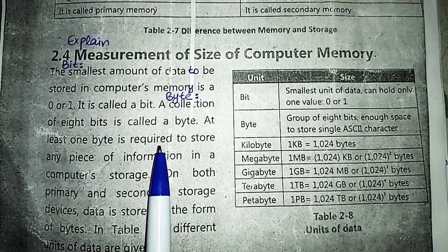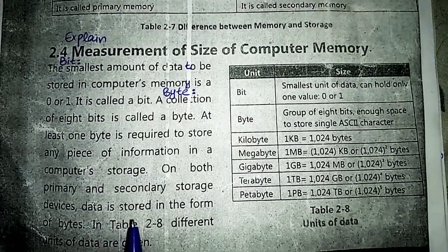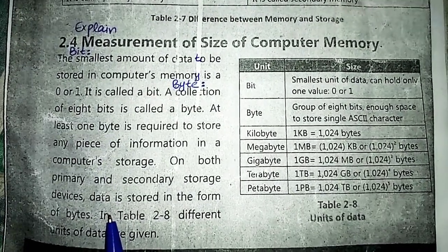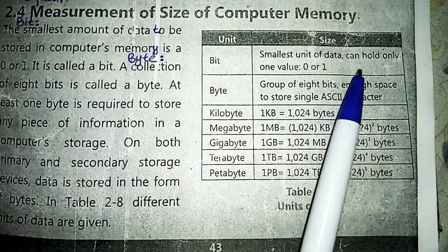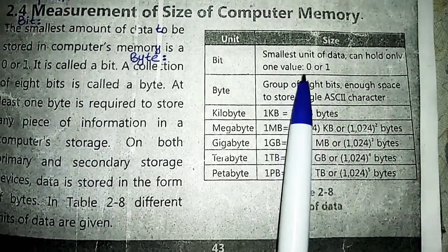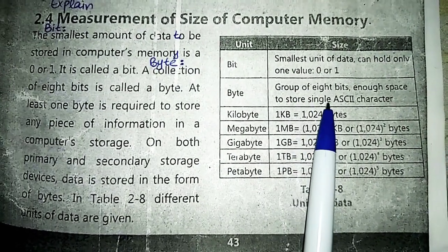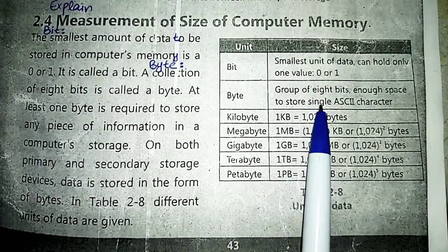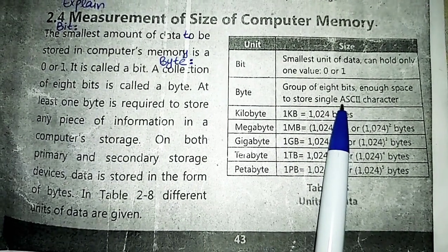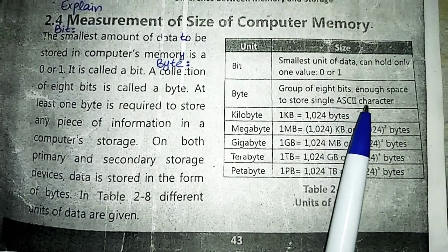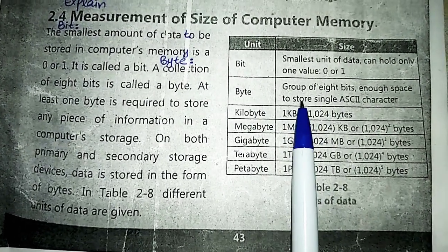Now we will discuss units of data on both primary and secondary storage devices. Data is stored in the form of bytes. In Table 2.8, different memory units are given. A bit is the smallest unit of data and can hold only one value — zero or one. A byte is a collection of eight bits, and one byte is the memory required to store a single ASCII character. Every character is associated with an ASCII code, and when converted to binary form it is 7 bits, so one byte is required to store a single ASCII character.